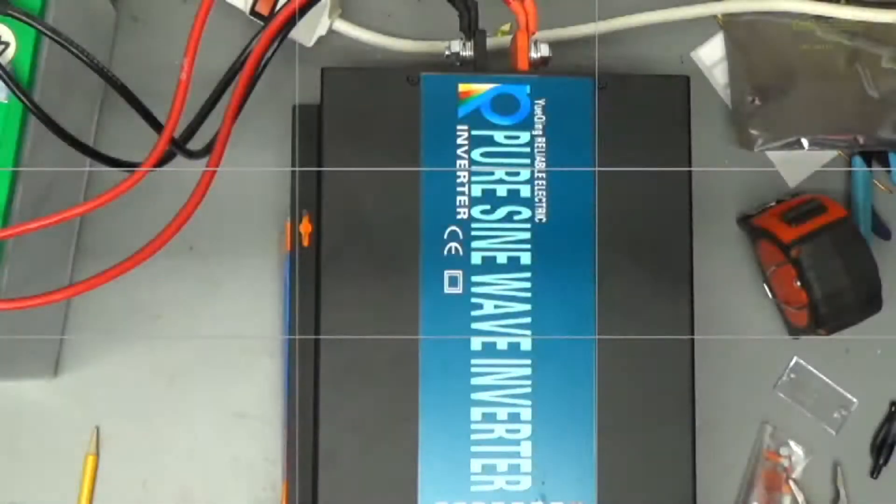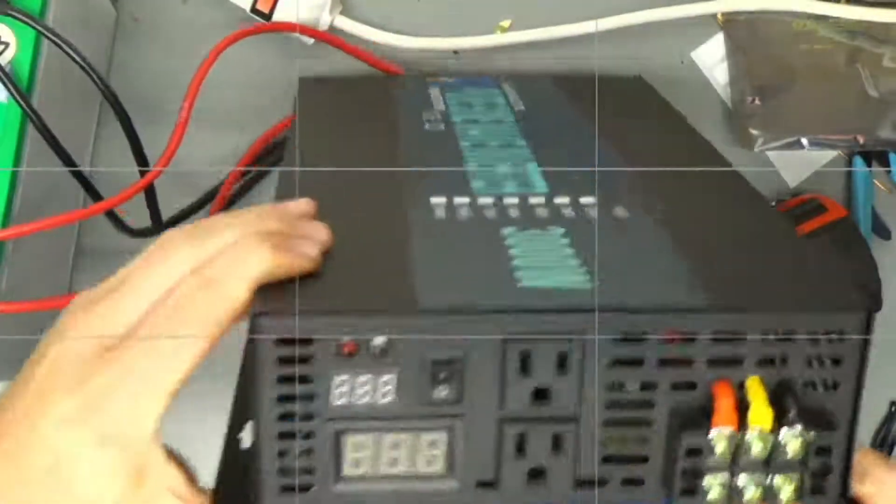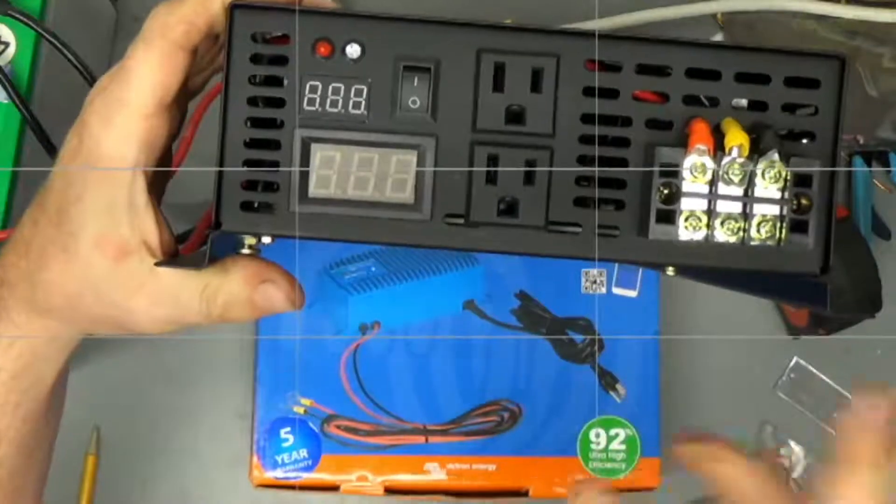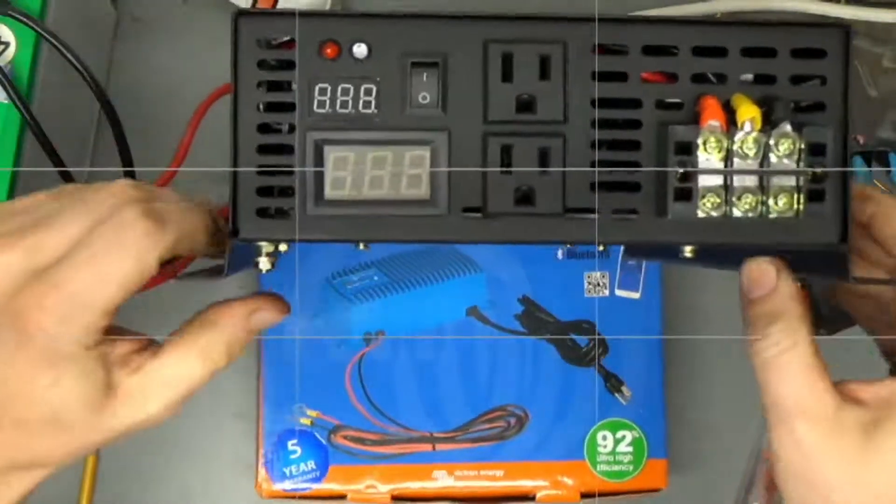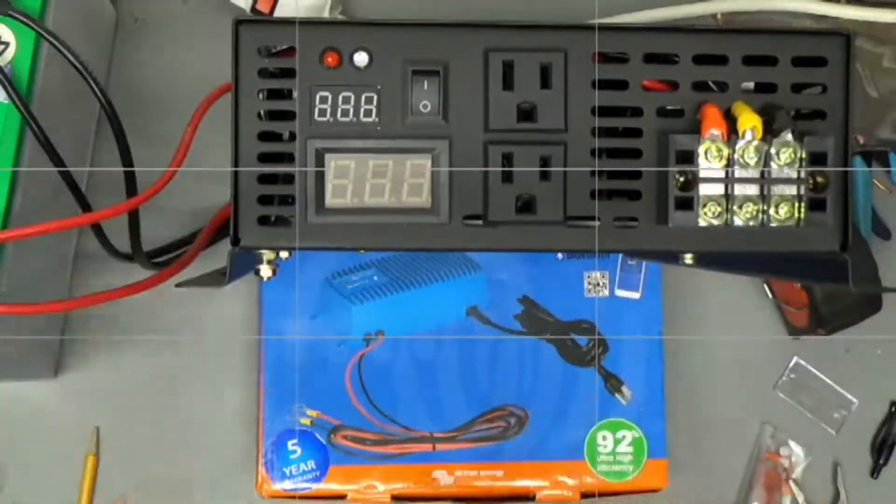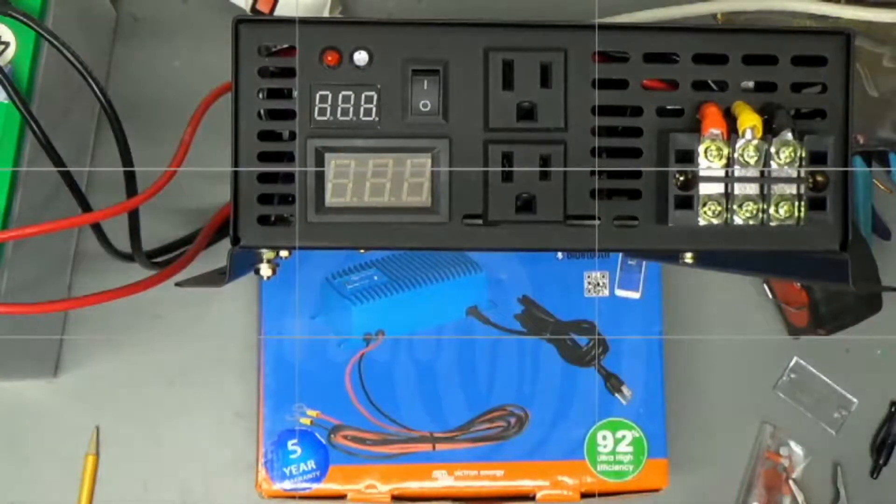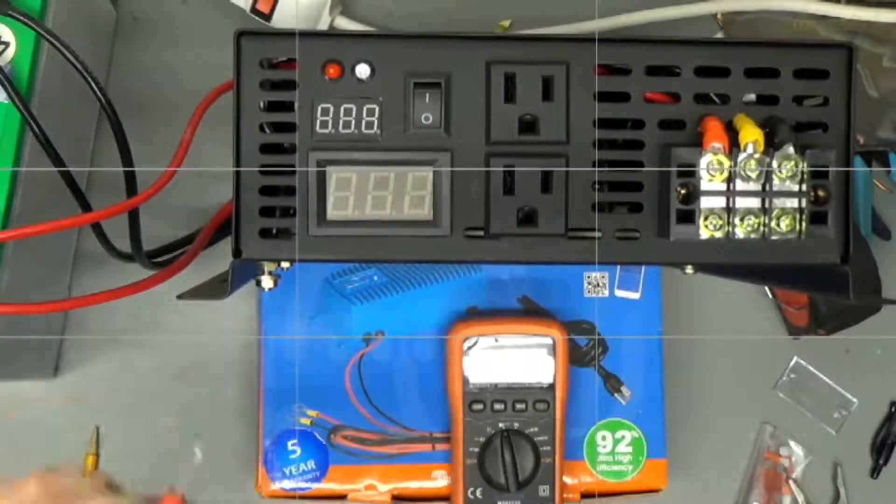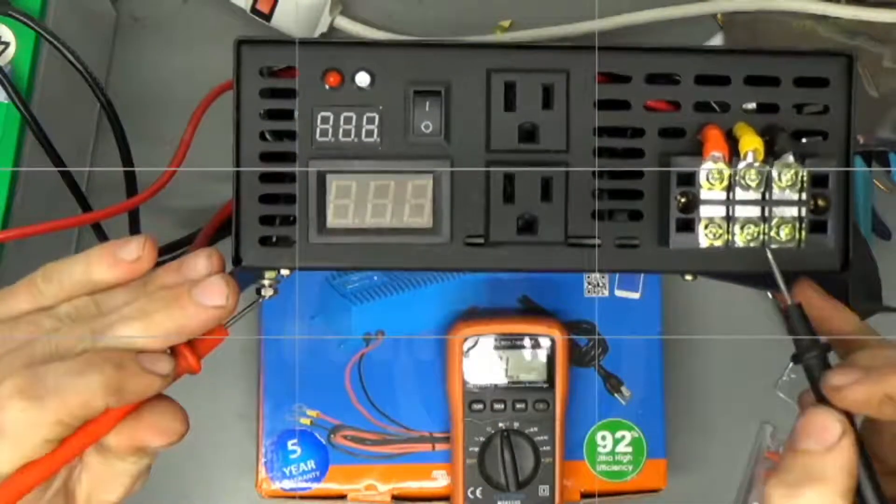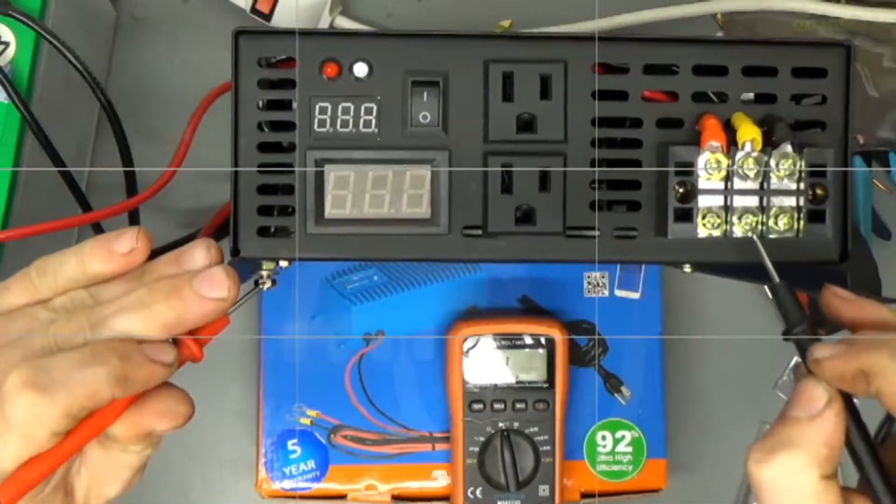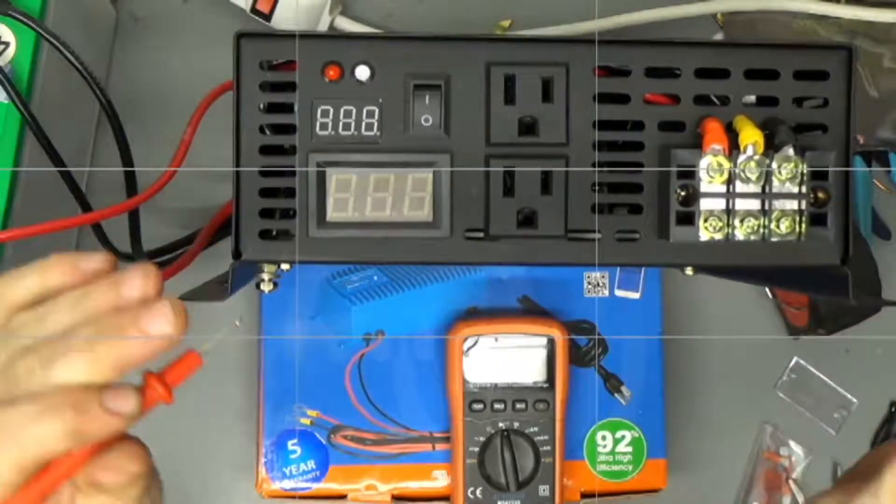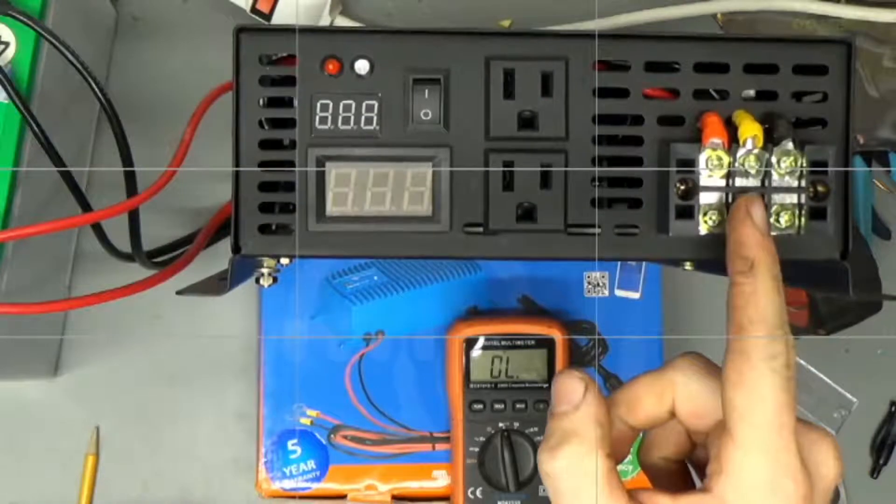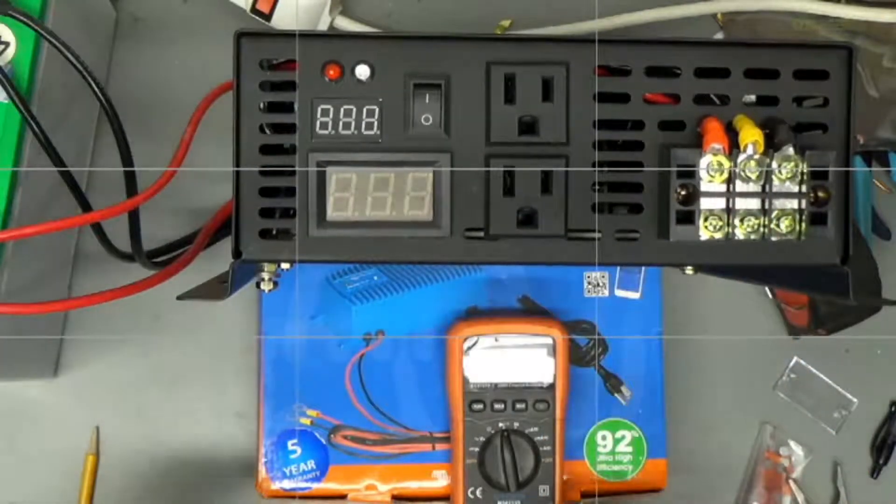And that generally works fine when you're just plugging shit into the receptacles because this is all isolated. Well, the case is grounded. The case is grounded to that so-called neutral. Let's check it and see. Yeah, okay, so the metal enclosure is attached to this so-called ground in the middle here.